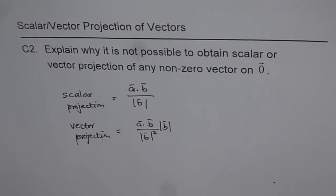So in any case, the formula is a good explanation why we cannot have scalar or vector projection of any non-zero vector, or for that matter, of even zero vector, on a zero vector. I hope you understand. Thank you.